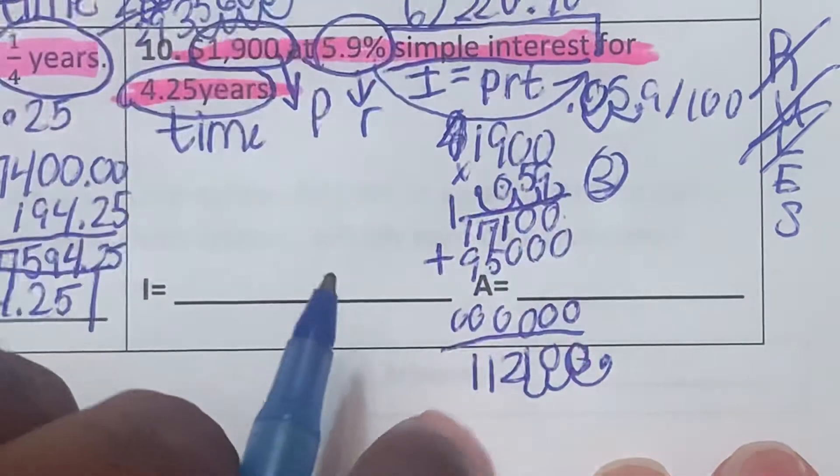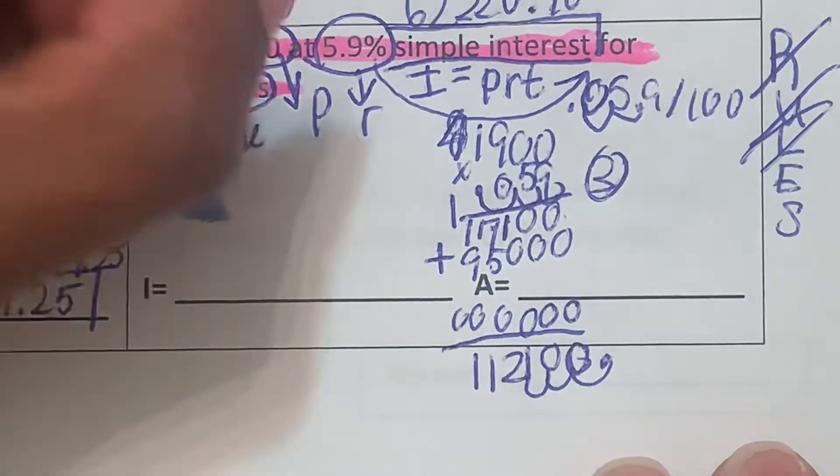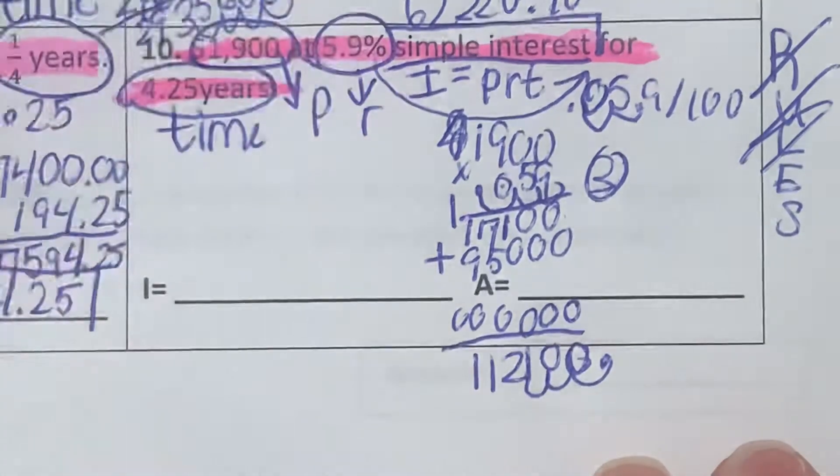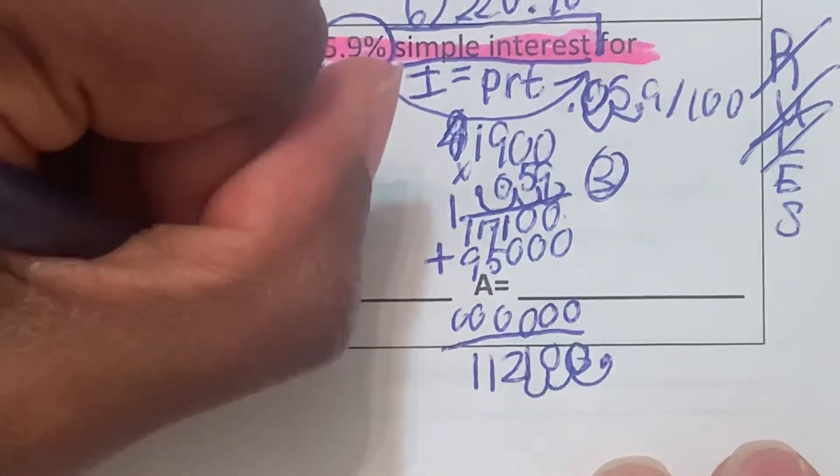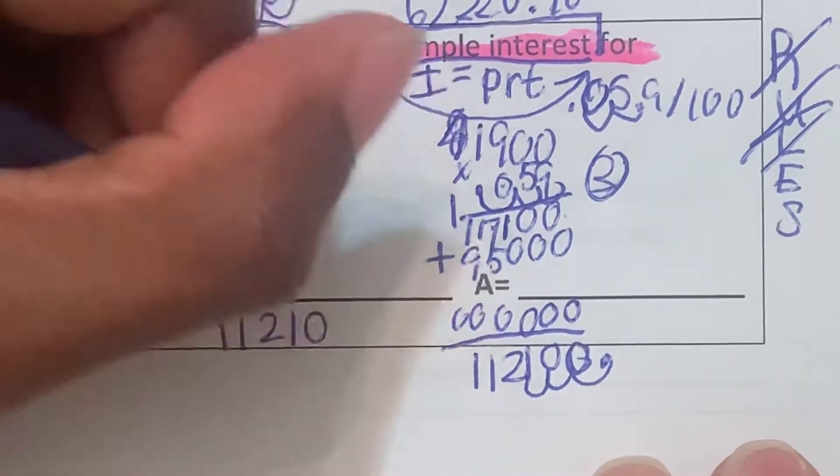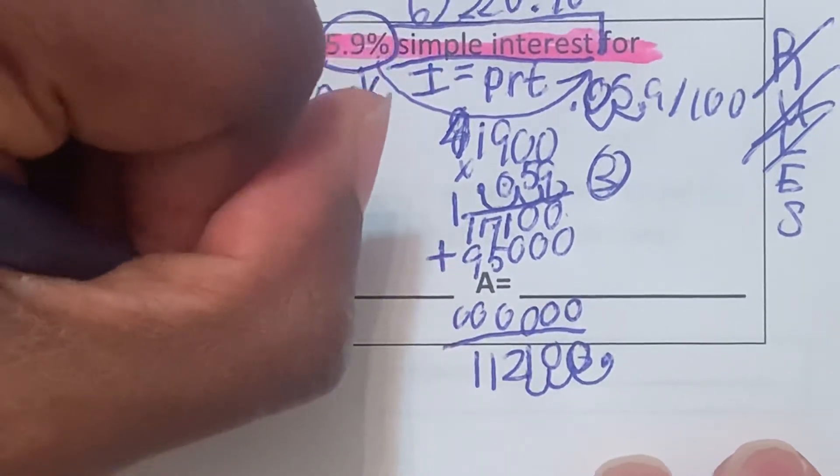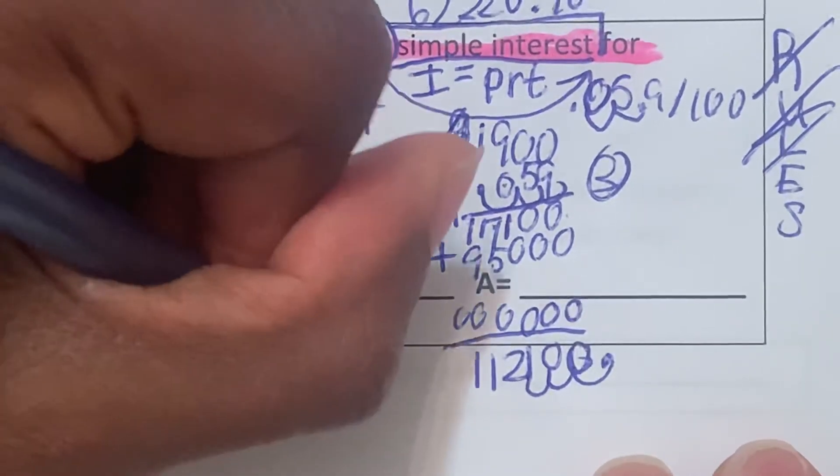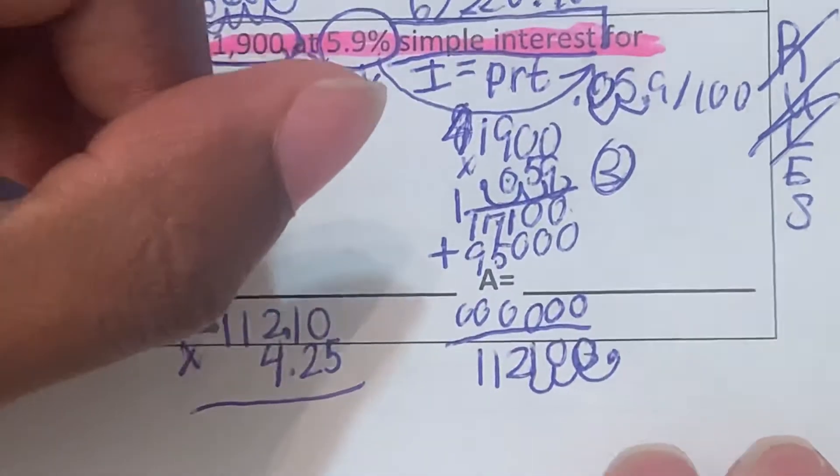We've got to multiply this by the 4.25 years. So I'll do that right over here. It's going to be $112.10 multiplied by 4.25. Let's multiply this out.